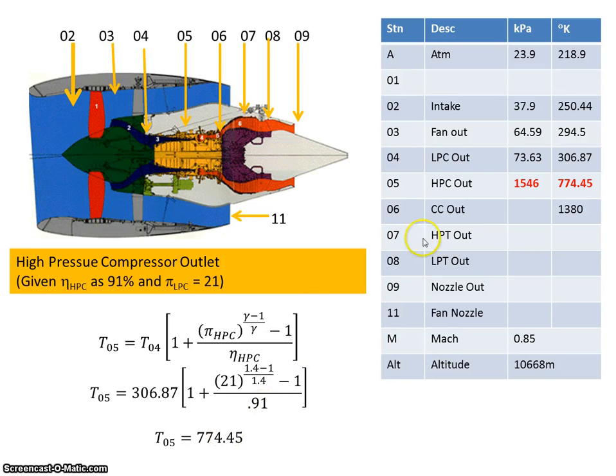In the previous video we calculated the output of the high pressure compressor. We saw it to be 1546 kilopascals and 774.45 degrees Kelvin. So now we are going to go to the combustion chamber.